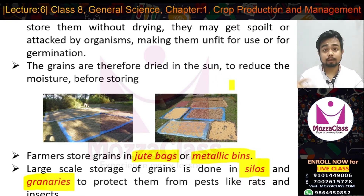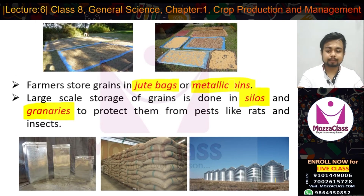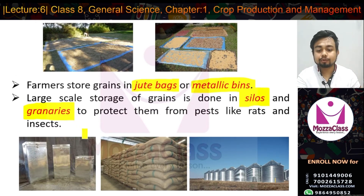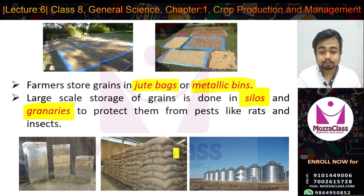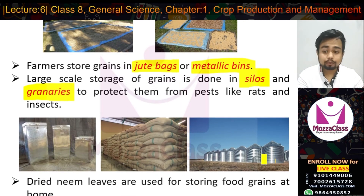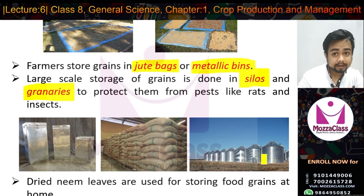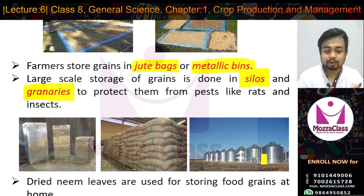Here we can see pictures showing rats, insects, and microorganisms that damage stored grain. Grains can be stored in metallic bins or jute bags, and in granaries. After harvesting, the grain is stored, and dried neem leaves can be used to protect the stored grain.